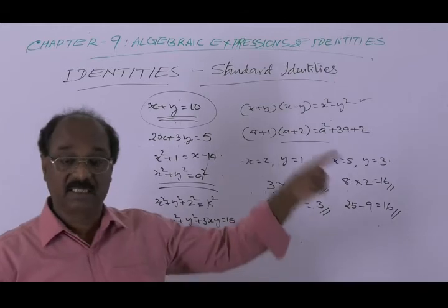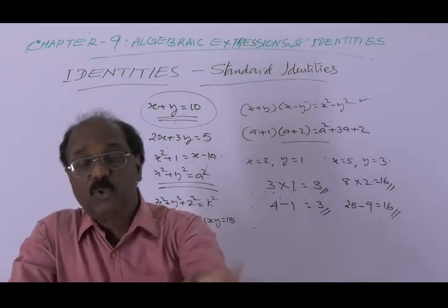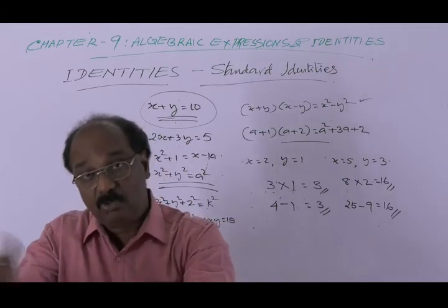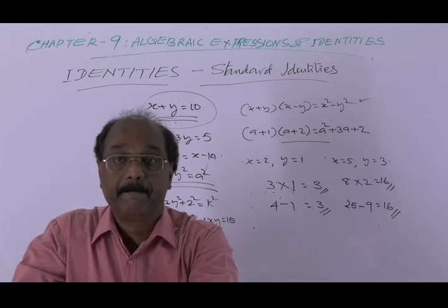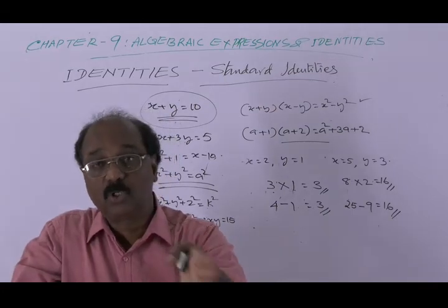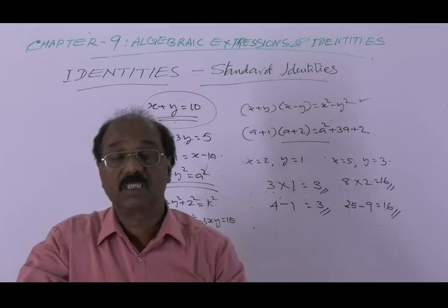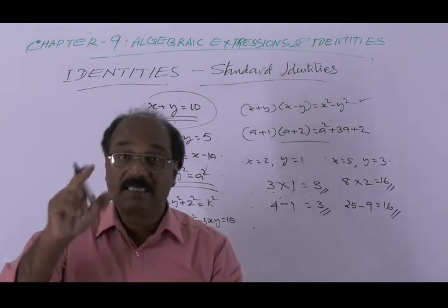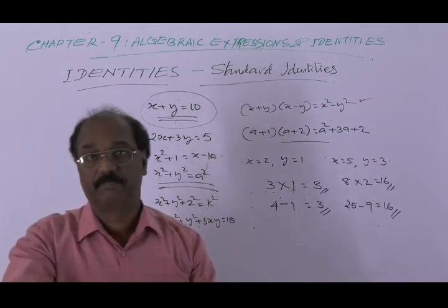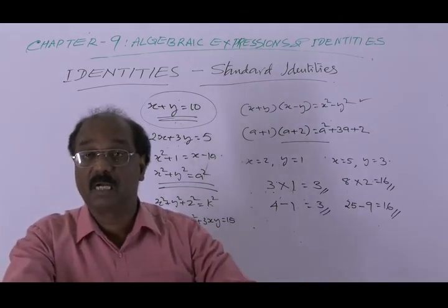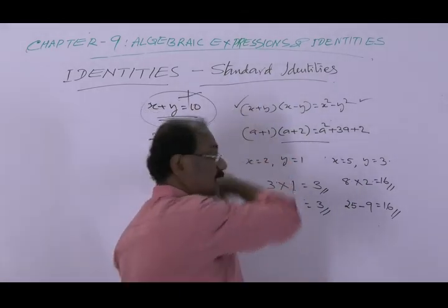Similarly, we can see that for any set of values for x and y — choose any positive or negative values — left side equals right side, that is, the equation is true. Such equations are called identities. So this is an identity, and x plus y equal to 10 is not an identity.